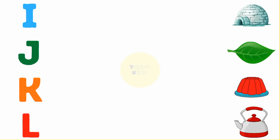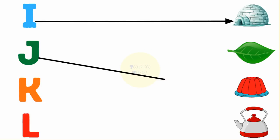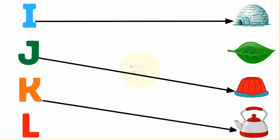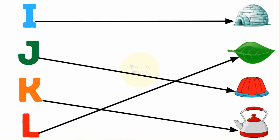I for Igloo, J for Jelly, K for Cattle, L for Leaf.